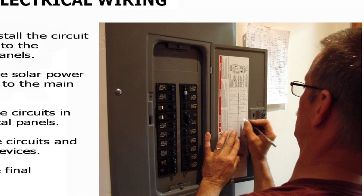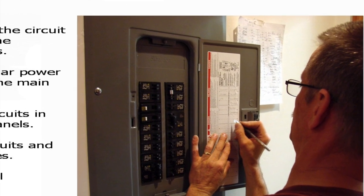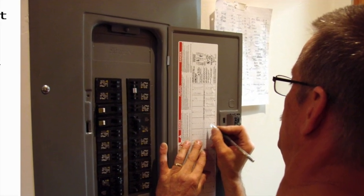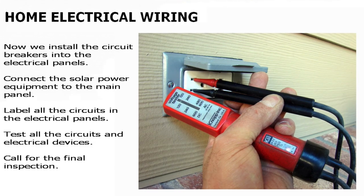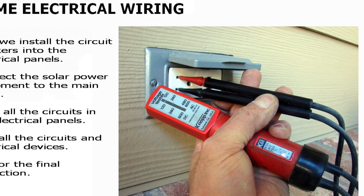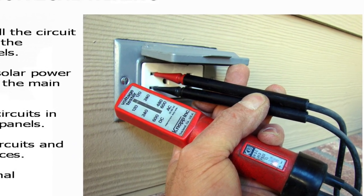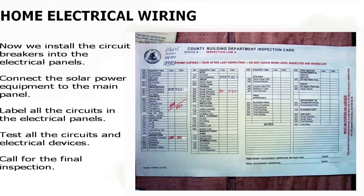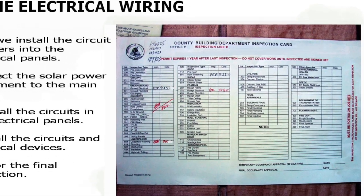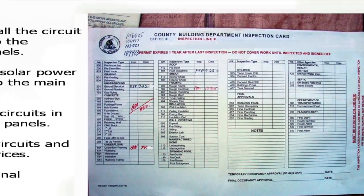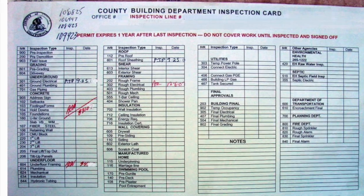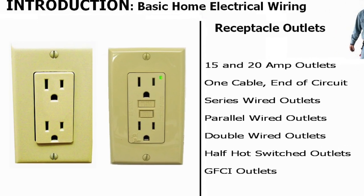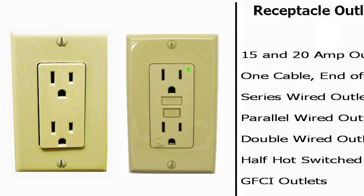We wrap up by documenting and hooking up all the circuit breakers, labeling everything very carefully, testing everything to make sure it's working, labeling the panel, and then getting the final inspection. And then we're done with the project.